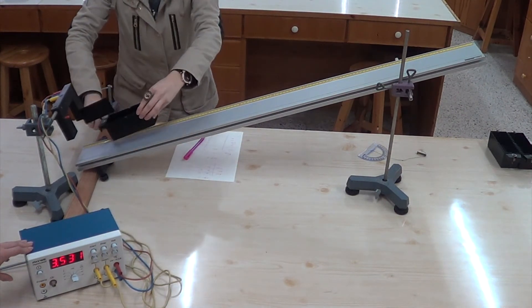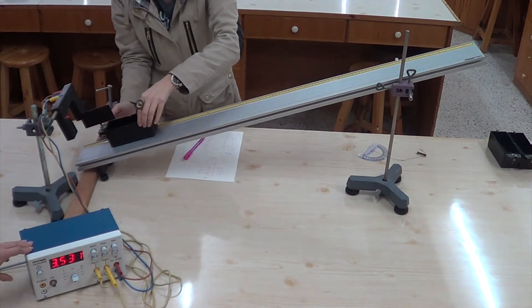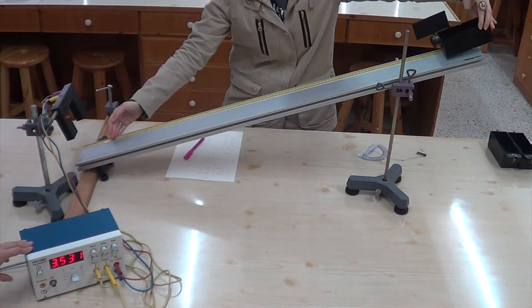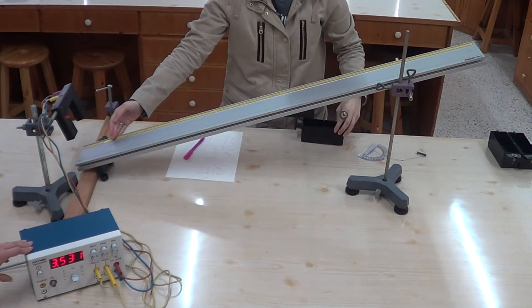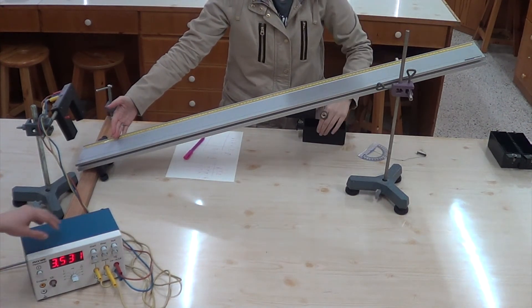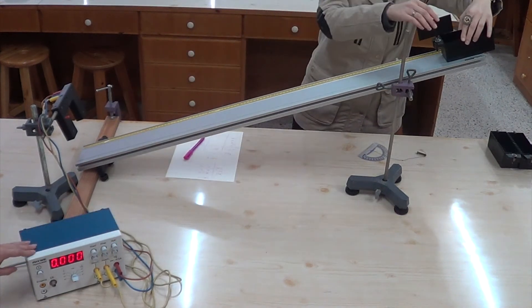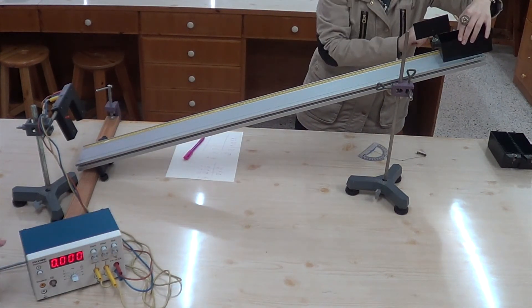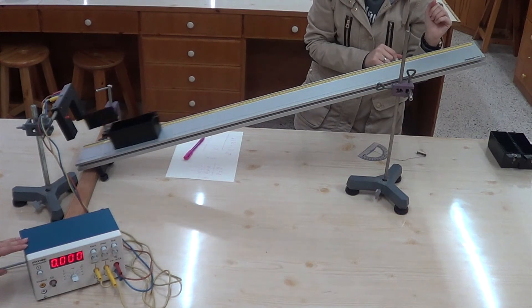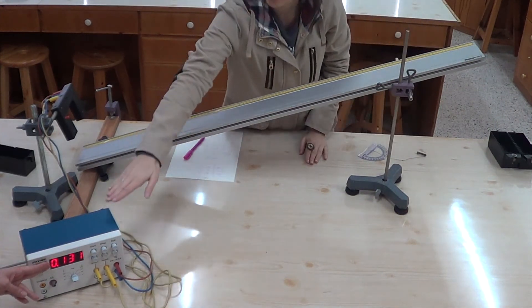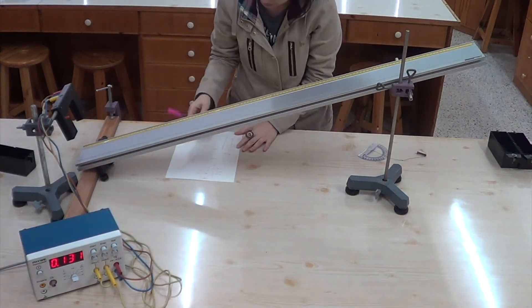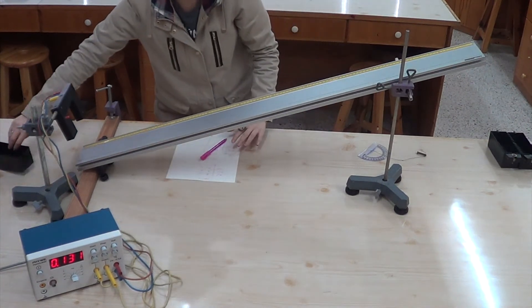Having done so, move the cart 100 centimeters backwards, press null, and let it go. Record the associated time value into your logbook.